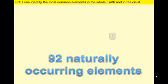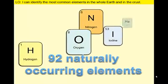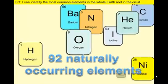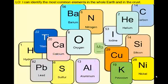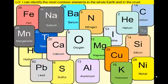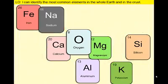There are 92 naturally occurring elements on earth. Rocks and minerals are composed of combinations of these elements, but don't get too worried about learning all of the names. Just eight elements make up most of the rocks in the earth's crust, and several of these are also key ingredients in earth's core and mantle.